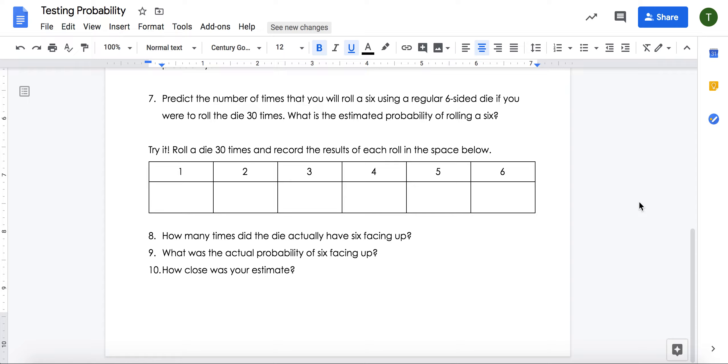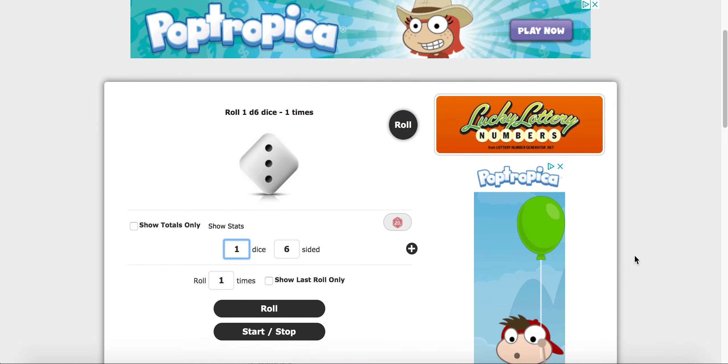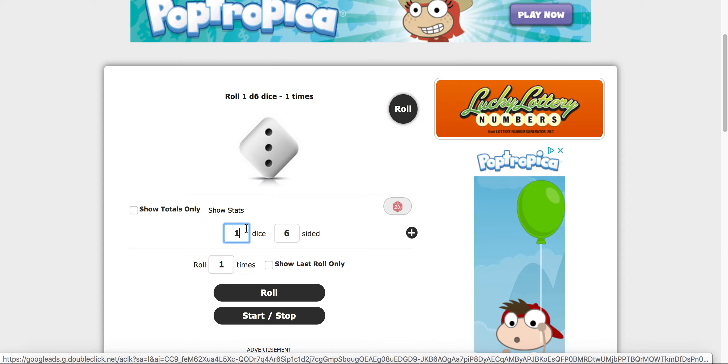Then you'll actually try the experiment, roll a die 30 times, and record the results of each roll in the space below. For this, I've also given you another website called rolladie.net. On here, you can choose the number of dice, so in this case we're only rolling 1, and it's a regular 6-sided die.